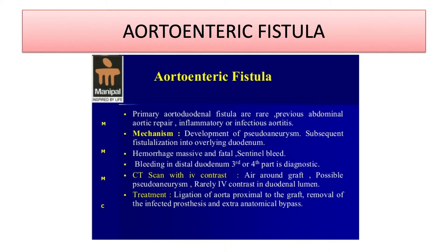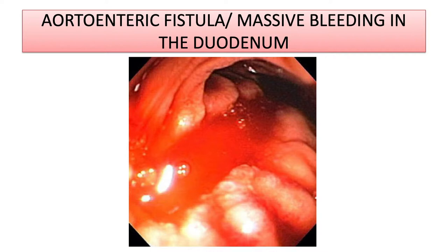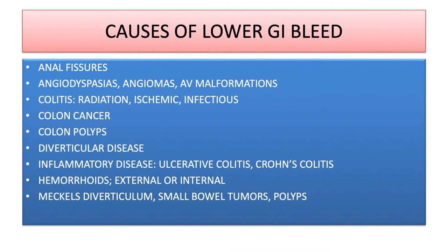The surgical treatment for aortoenteric fistula is very sophisticated: you ligate the aorta proximal to the graft and perform an extra-anatomical bypass — axillo-bifemoral bypass — placing plastic grafts from the axilla to both femorals. This procedure can take 10 to 16 hours. The bleeding from the fourth part of the duodenum can be quite massive, so if an older patient presents with vomiting blood, keep this in mind.